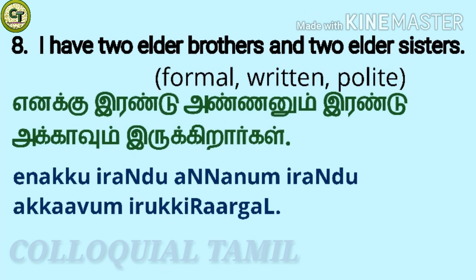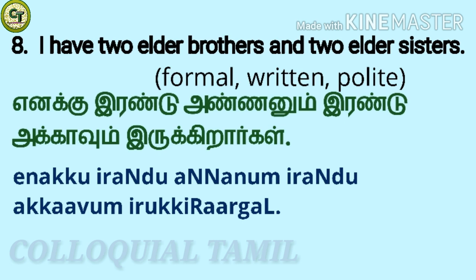I am using the number 2 as an example here — you can substitute whatever number you want. To say 'I have 2 elder brothers and 2 elder sisters' — 'Ena kku Irenda Annanum Irenda Akkkavuum Irikkira Arghal.' This is in formal form, which is also the written form and the polite form. For 'Annanum,' remove the last letter N at the end of Annan and add NU — short vowel and consonant N — together: Annanum. For 'Akkkavuum,' add WU — short vowel and consonant N — at the end of Akkka: Akkkavuum. The colloquial form is 'Ena kku Irenda Annanum Irenda Akkkavuum Irikkaang.'